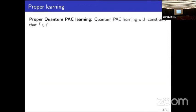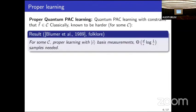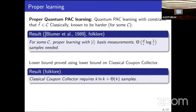If you enforce the algorithm to output an f-tilde within the same function class, that becomes proper quantum PAC learning. Classically, it has been shown this problem is strictly harder for certain function classes C — with just computational basis measurements, the sample complexity requires an extra factor of order log(1/epsilon). This lower bound is proven via the classical coupon collector problem, which is equivalent to using computational basis measurements in the quantum coupon collector problem.